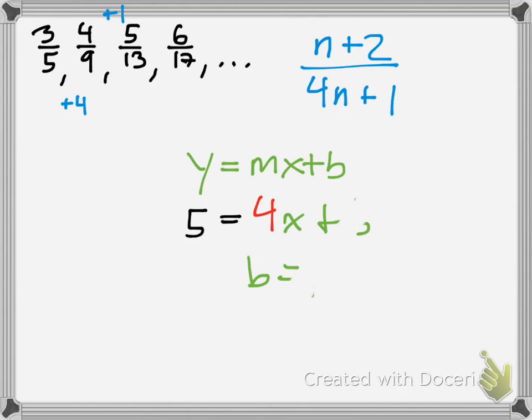And to check your work to see if that really makes sense, you plug in your first term, and you say, okay, 1 times 4 is 4 plus 1 is 5. 2 times 4 is 8 plus 1 is 9. Hey, look, it's working. So that would actually be your term.